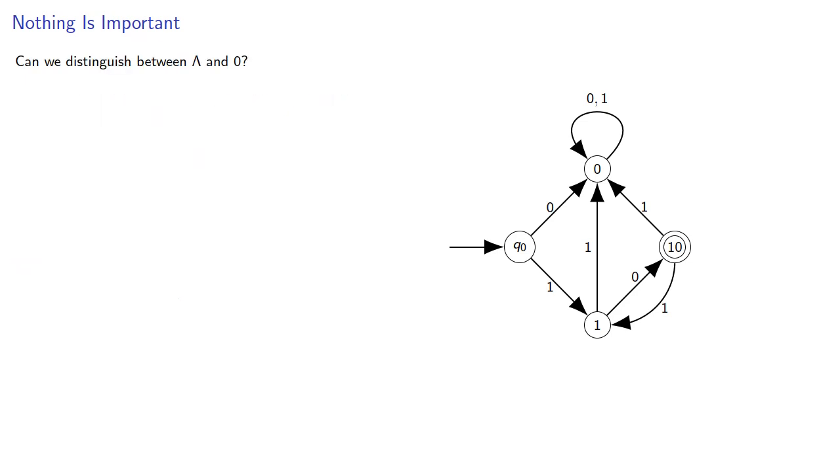So can we distinguish between the empty string and 0? Suppose z is in our language, then again λz is z, which is in our language, and 0z, remember our language consists of repeated 10's, so this is definitely not in L. And so we can distinguish between λ and 0.